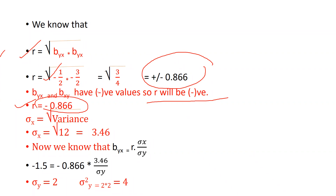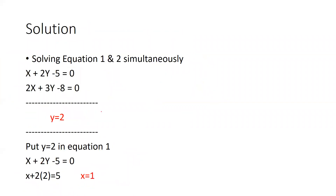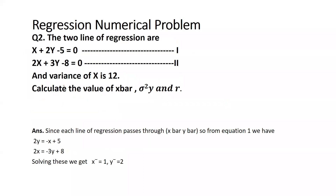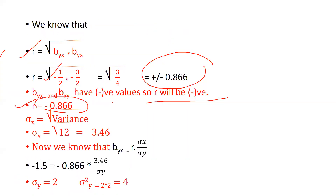After this, because variance of sigma x is already given, the formula is sigma x equal to square root of variance. The variance of x variable is already given in the question as 12. So sigma x equal to square root of 12, and finally we have got sigma x equal to 3.46.